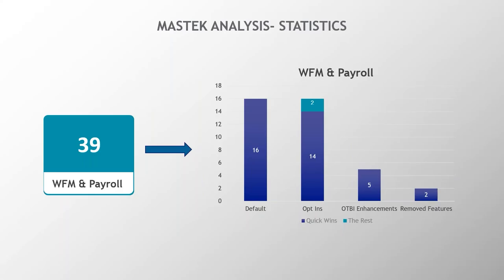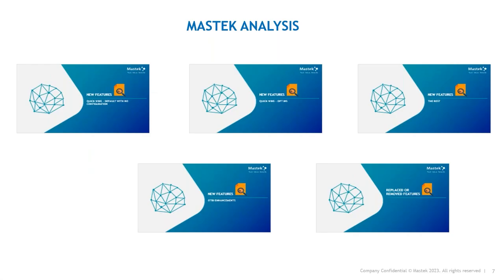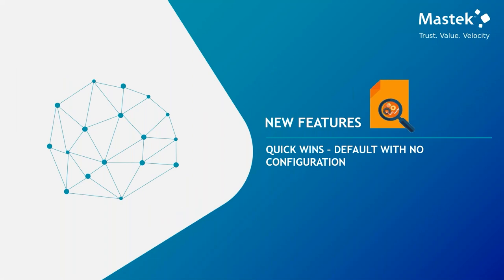Overall there are 39 updates that we are going to talk about in today's presentation. We have bifurcated them into multiple sections: OTBI enhancements, removed features, opt-in options, and default features that we can directly start using as soon as the update arrives. We'll start with the quick wins — those requiring no configurations — which will be available to everyone from day one.